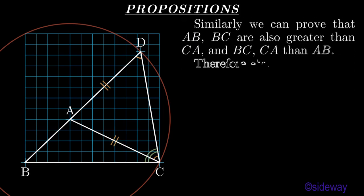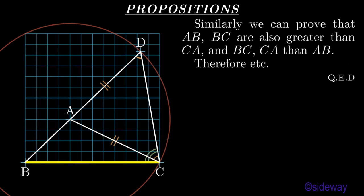Similarly, we can prove that AB, BC are also greater than CA, and BC, CA than AB. Therefore, etc. What was to be shown?